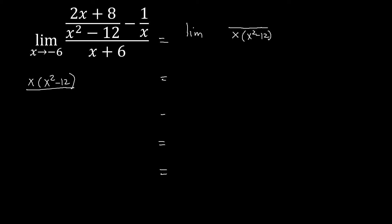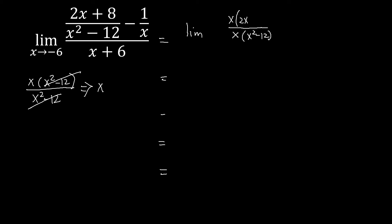We divide our LCD, x times (x squared minus 12), by the denominator of the first fraction, x squared minus 12. We can clearly cancel x squared minus 12, leaving us with x. This x we simply multiply to the numerator, which is 2x plus 8. So we have x times (2x plus 8).